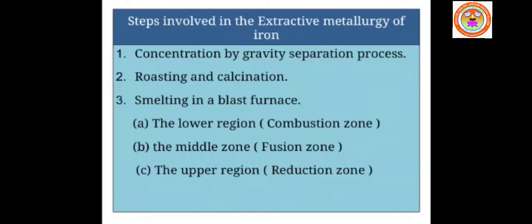The next step is roasting and calcination. When we roast, impurities like arsenic and sulfur present in the ore are removed as their oxides. Calcination is heating the ore in the absence of air. Roasting is heating the ore in the presence of excess oxygen. Calcination is heating the ore in the absence or with a very small amount of air. Through roasting and calcination, the unwanted substances present in the ore are removed.